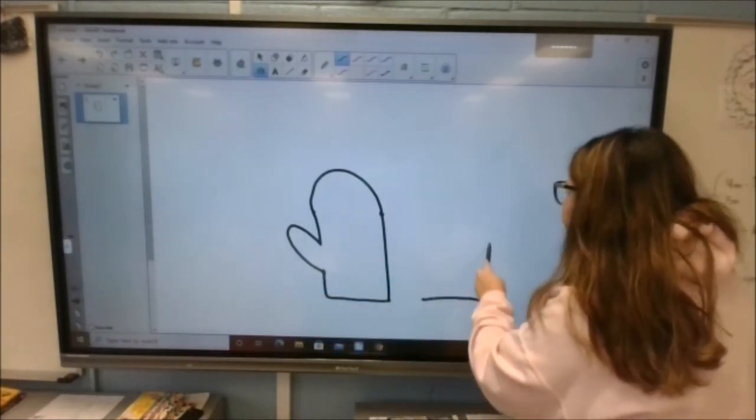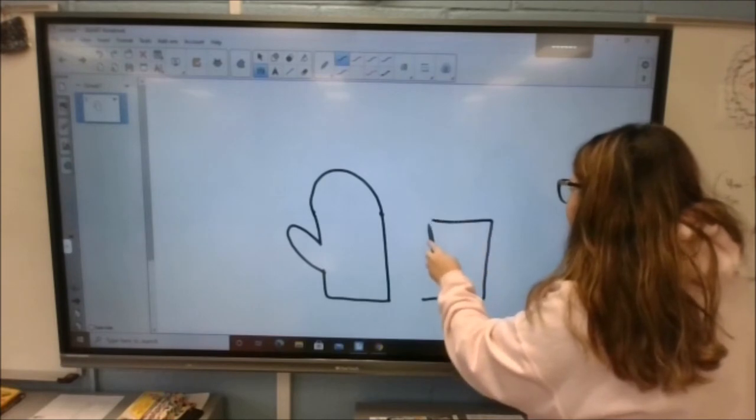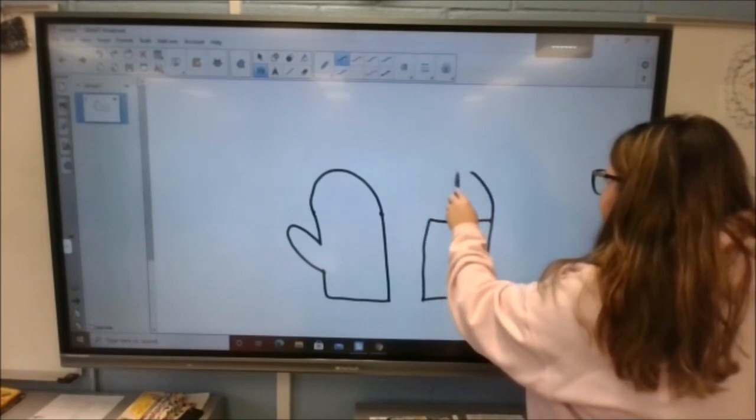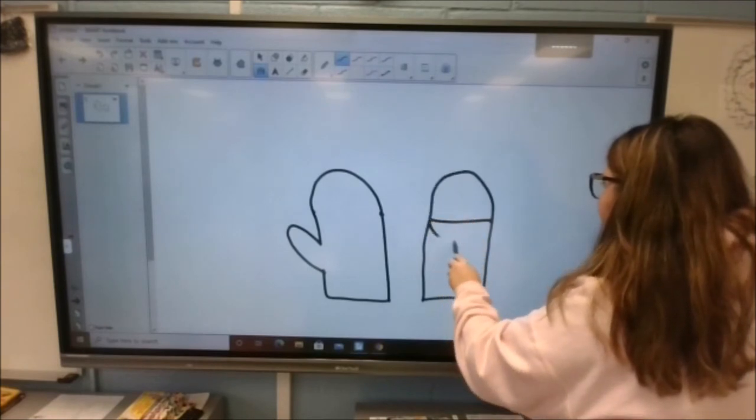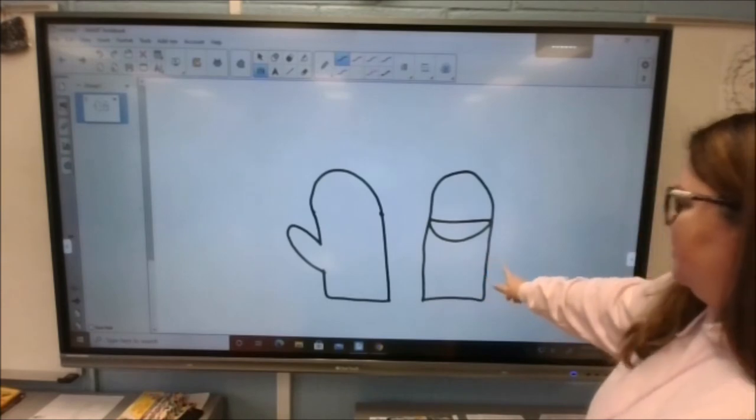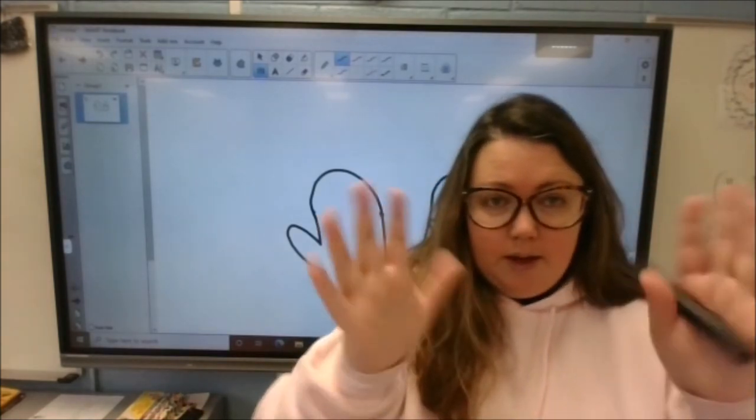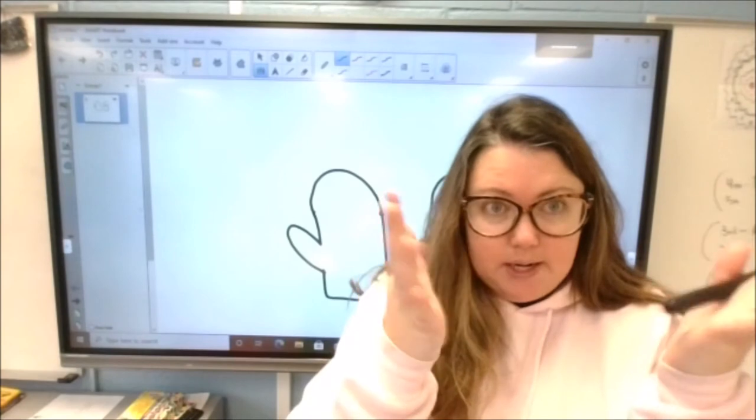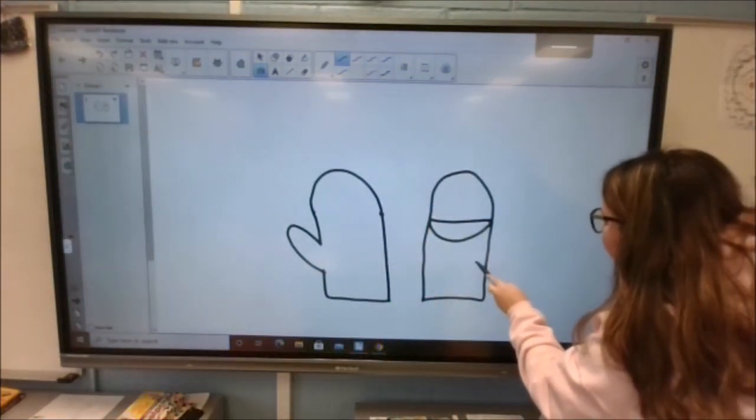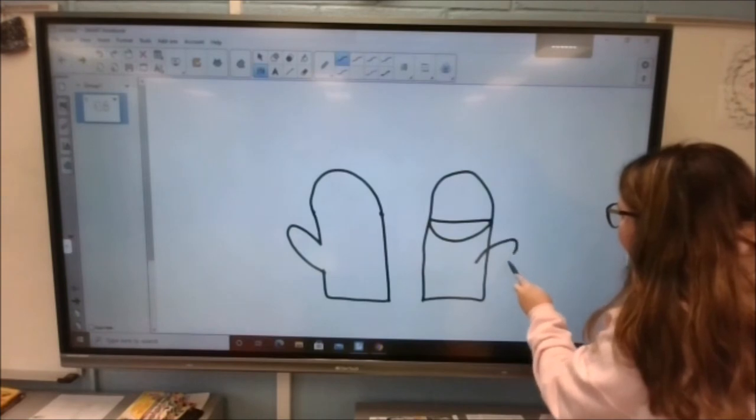I'm going to start out with my square again. I'm going to put my circle inside that little square area. But this time, I'm going to put my thumb on the other side, right? Because when we wear mittens, our thumbs are going to be on different sides. So this time, I'm going to put my oval for the thumb over here on this side.